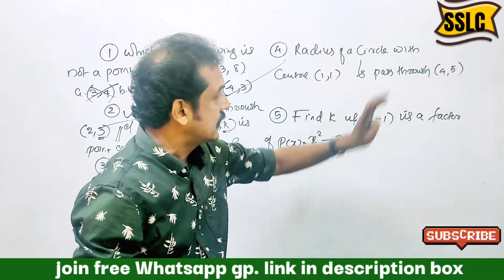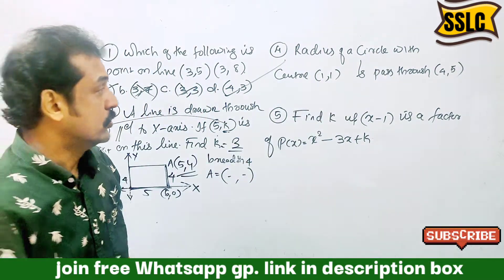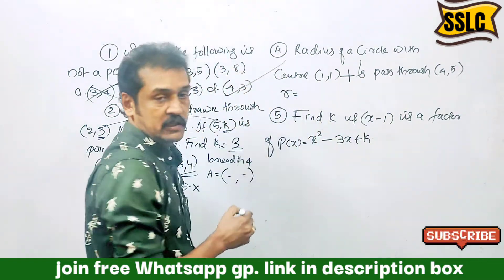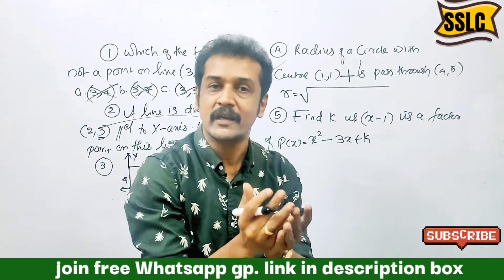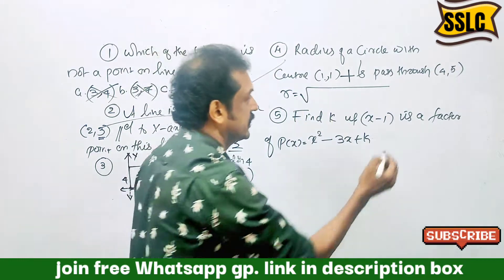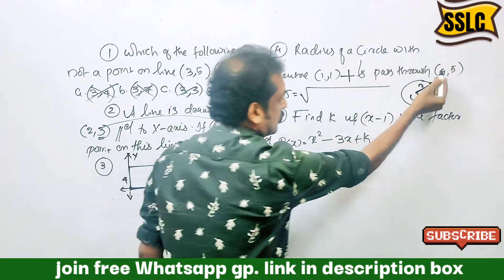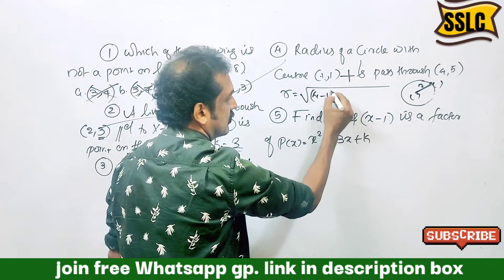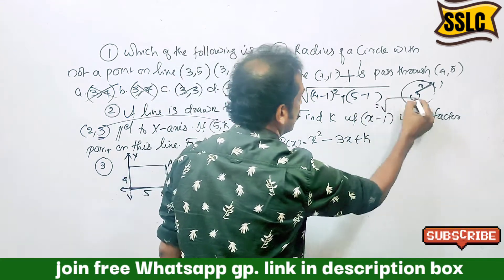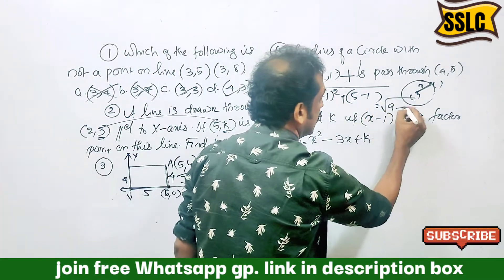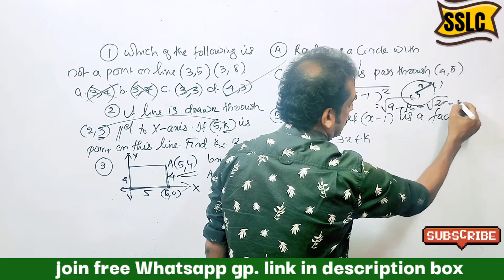Next, radius of a circle with center (1,1) and passing through (4,5). The radius is equal to the root of the distance between these two points. That is the root of (x2 minus x1) squared plus (y2 minus y1) squared. That is root of (4 minus 1) squared plus (5 minus 1) squared — root of 9 plus 16, root of 25. Answer is 5.